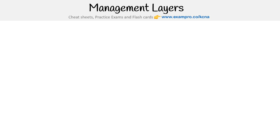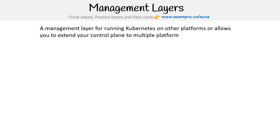Let's take a look at management layers. There are a lot of management layers for Kubernetes, and some of these might be their own distributions with a platform on top. It's hard to put them in a box, but I tried to group them separate from pure distributions. Management layers are for running Kubernetes on other platforms, or allow you to extend your control plane to multiple platforms — not necessarily as a service like EKS, but more like setting it up on virtual machines.